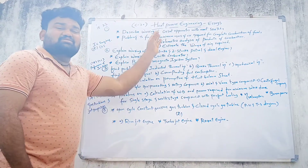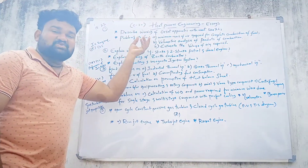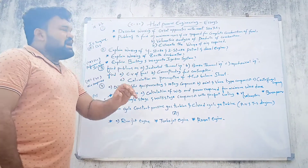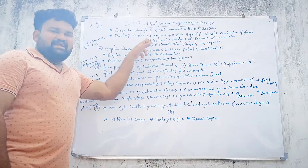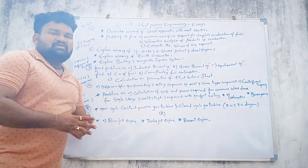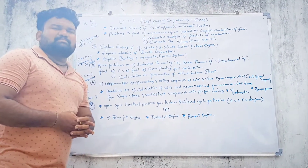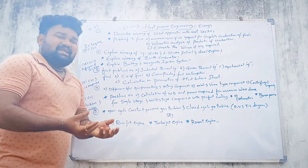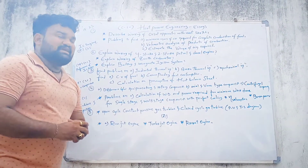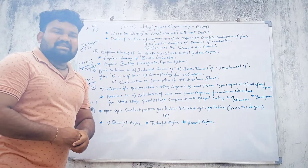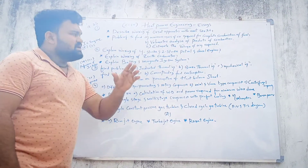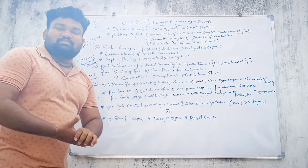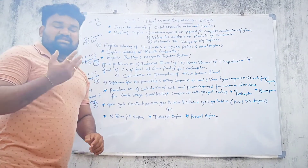The next problem is to find the minimum mass of air required for the complete combustion of fuel, the volumetric analysis of the products of combustion, and to estimate the volume of air required. This covers the three parts of this combustion problem.